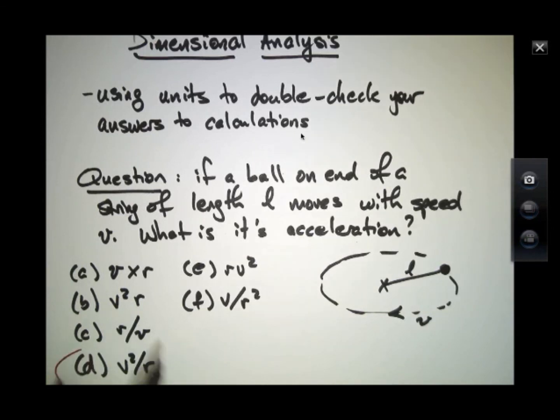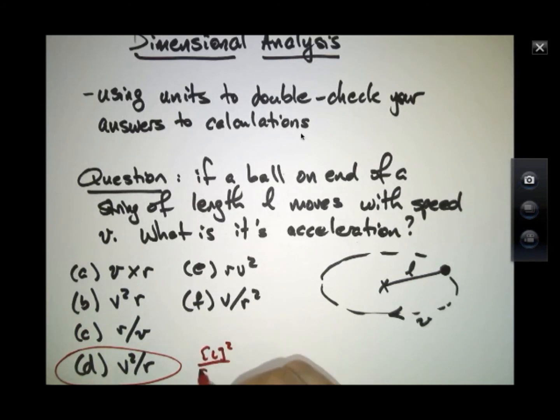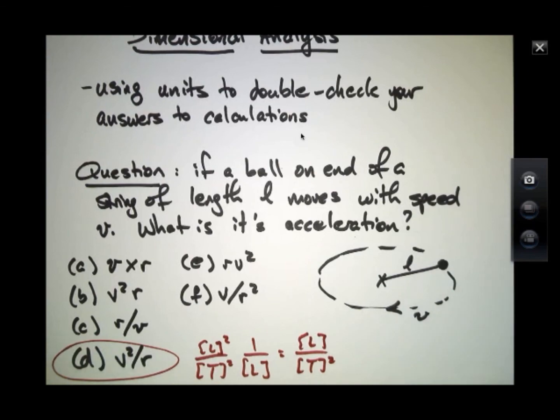The correct answer here is this one because in this case only do we have length squared over time squared and we divide by one over length. So it becomes length over time squared, which is required for any answer about acceleration. So the correct answer here is D.